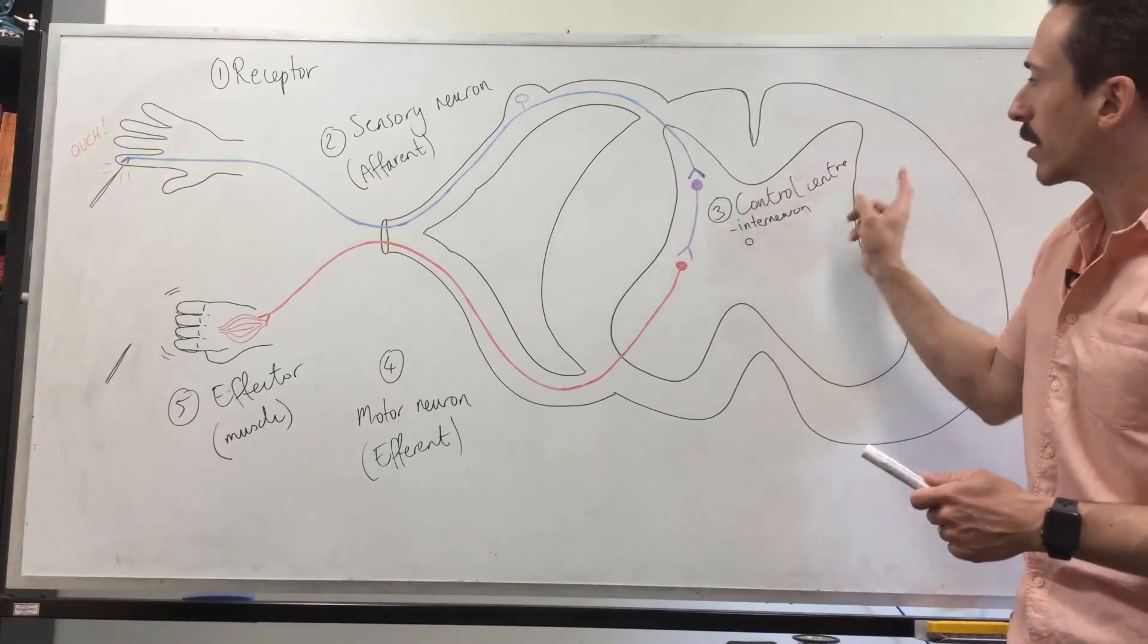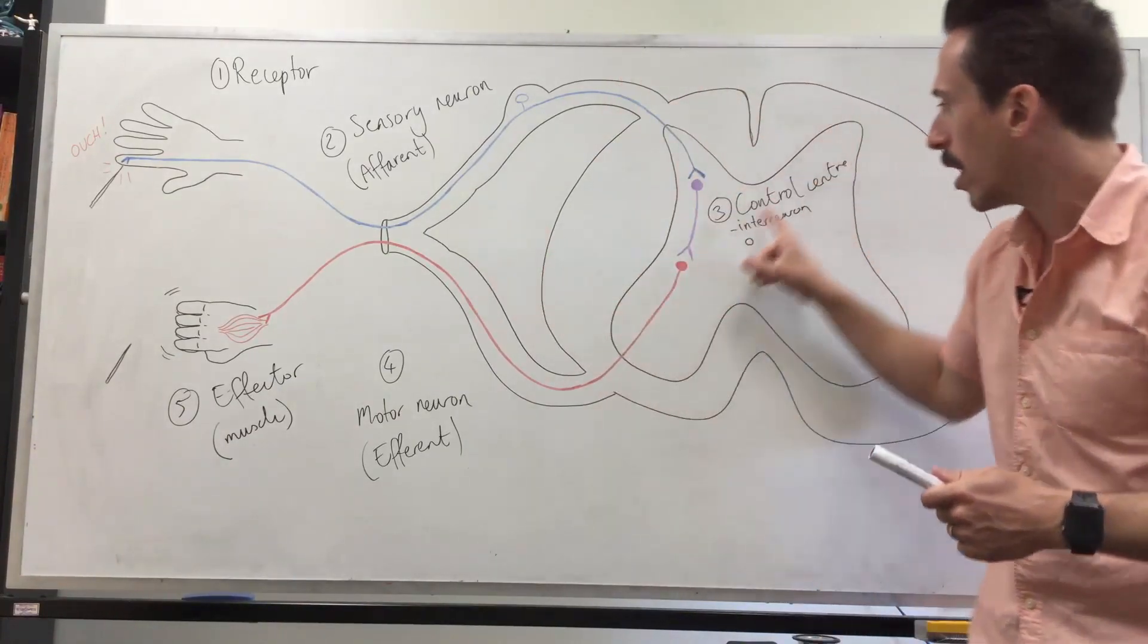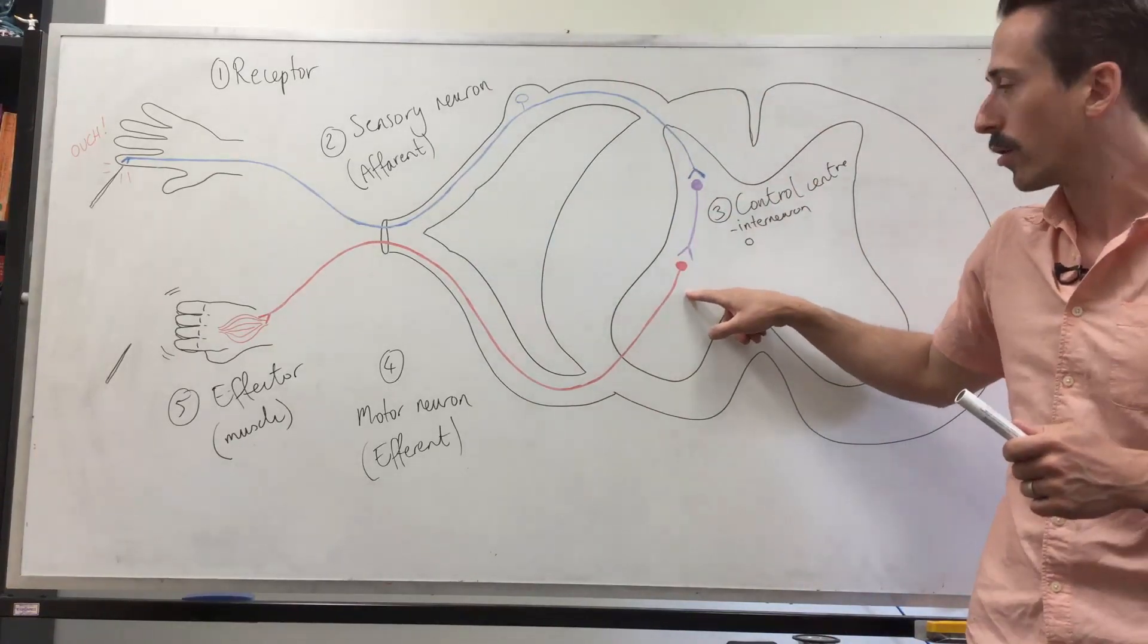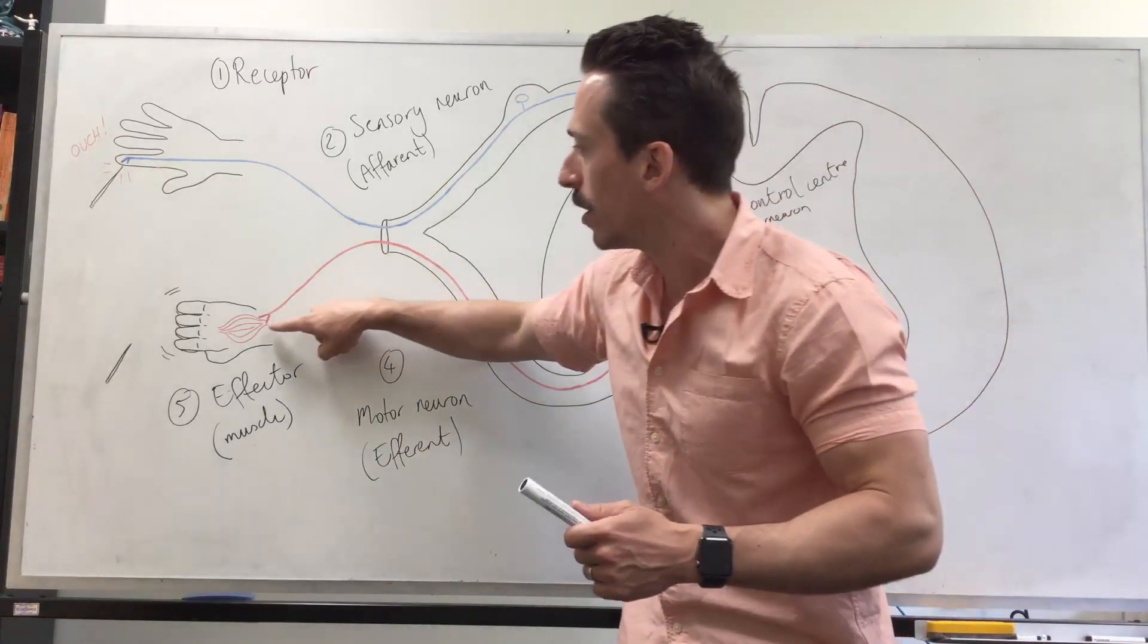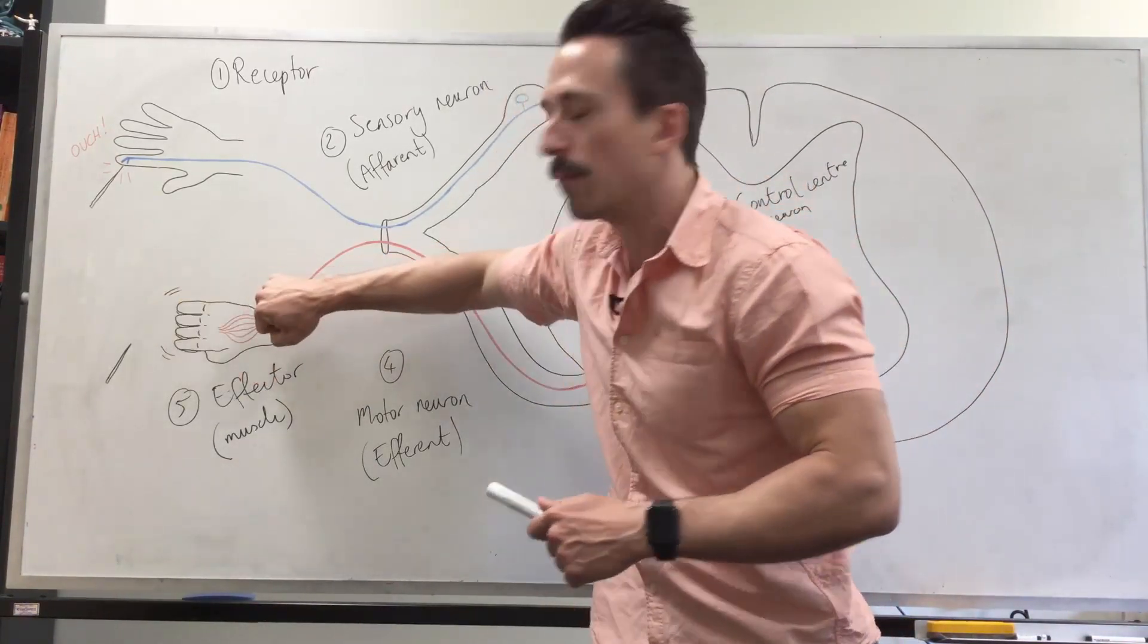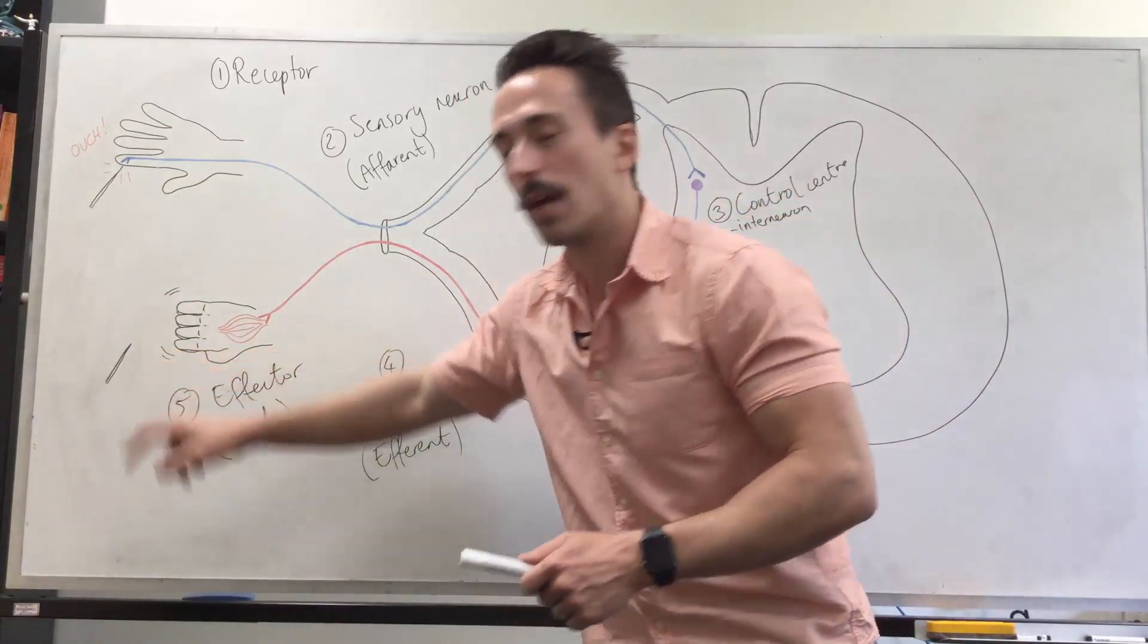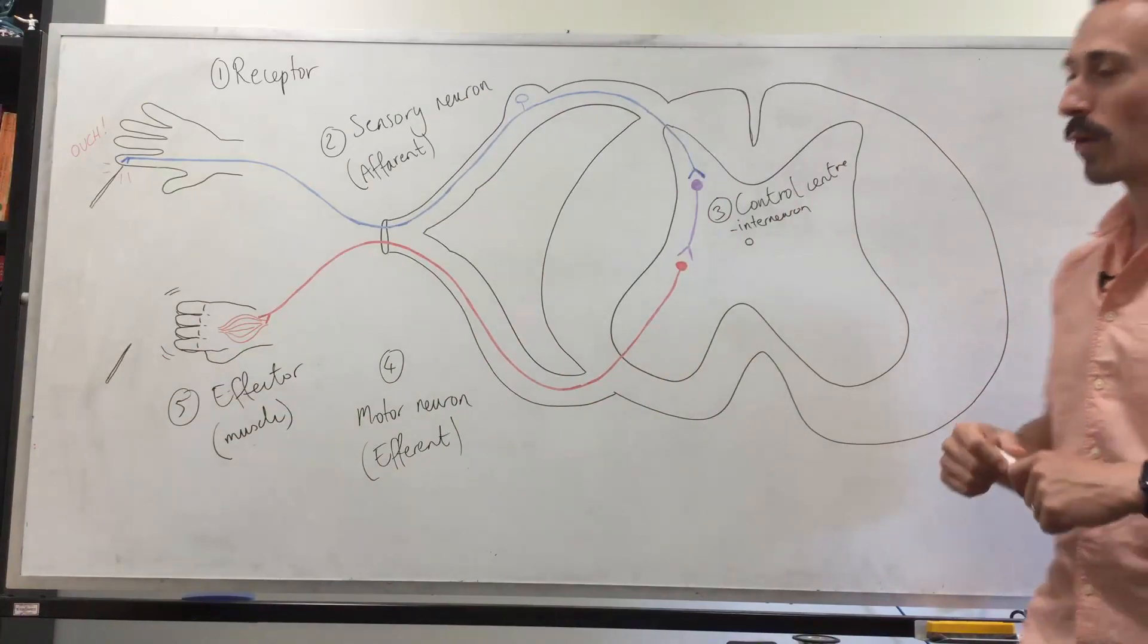It sends the signal to the control center: what do I want to do with this? I know I want to send it to a lower motor neuron. It throws it to a lower motor neuron which then comes out, that's the fourth component, sending an efferent signal to the muscle of the hand, also known as the effector, which will contract and move away, avoiding tissue damage or further tissue damage. This is an overview of a simple reflex arc.